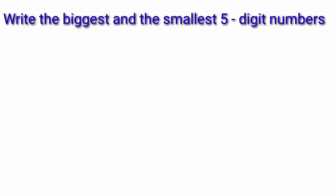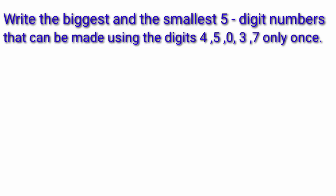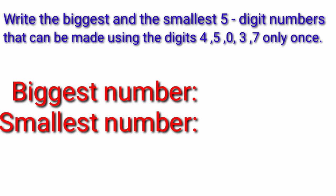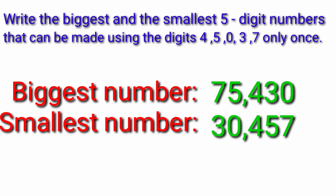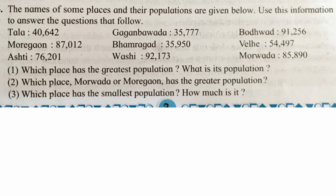The next question: write the biggest and the smallest five-digit numbers that can be made using the digits 4, 5, 0, 3, 7 — each only once. To make the biggest number, use the biggest digit first: seventy-five thousand four hundred and thirty. The smallest number is thirty thousand four hundred and fifty-seven, because if we put zero first, it becomes a four-digit number.